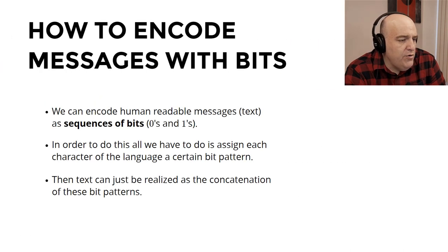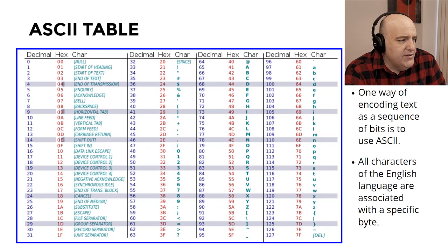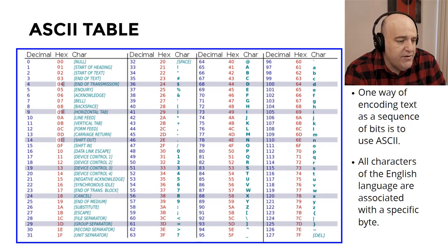The first thing is how do we encode messages with bits? We can encode human-readable messages like text using a sequence of bits — zeros and ones. To do this, we take each character of a language, in this case English, and assign each character a certain bit pattern. Any text can then be realized as the concatenation of those bit patterns.